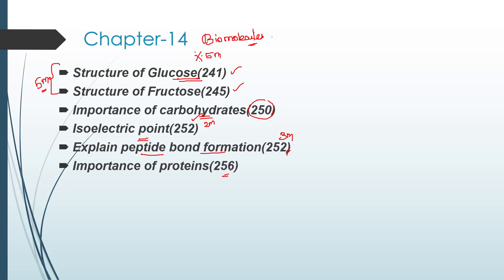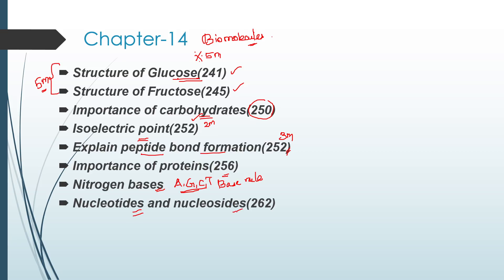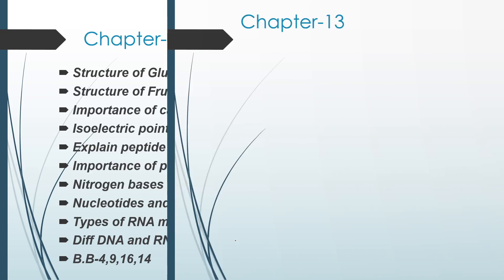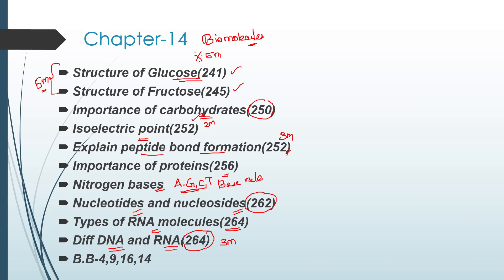Next, importance of proteins — just read, page 256. Then nitrogen bases: adenine, guanine, cytosine, thymine. Adenine and guanine form double and triple bonds respectively — Chargaff's base pairing rule is very important. Difference between nucleotides and nucleosides, page 262. Types of RNA molecules: mRNA, tRNA, rRNA, page 264. Differentiate DNA and RNA — very important 3-mark question, page 264. That's all about chapter 14 biomolecules.